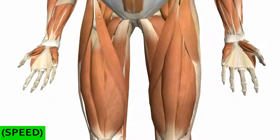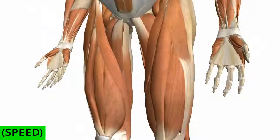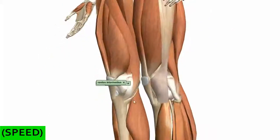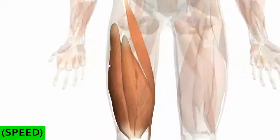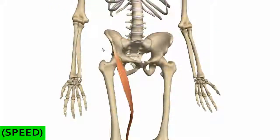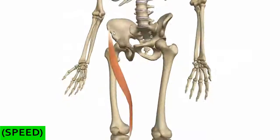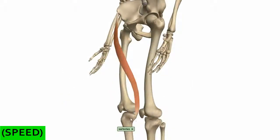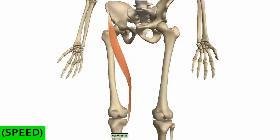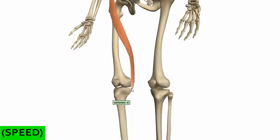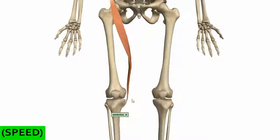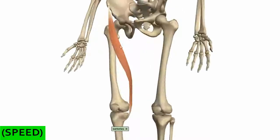The last muscle of the anterior compartment is the sartorius. It also originates on the pelvis and winds around, descending along the thigh obliquely to insert on the medial surface of the proximal tibia. Its origin is on the anterior superior iliac spine, winding down like a band onto the medial surface of the proximal tibia. It is innervated by the femoral nerve. Because it originates on the pelvis, it acts as a hip flexor, and it also flexes the leg at the knee joint — unlike the quadriceps which extend the knee.